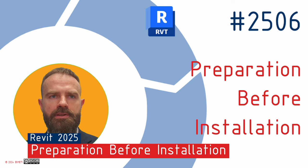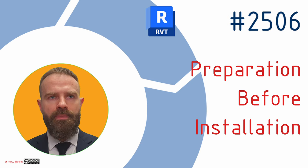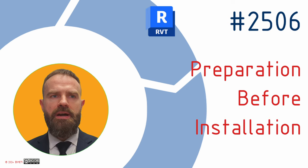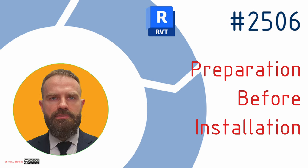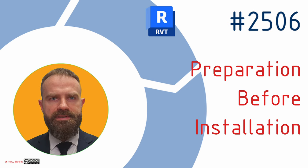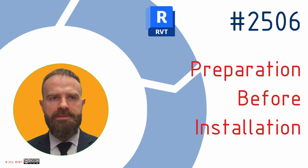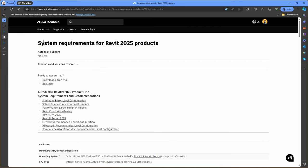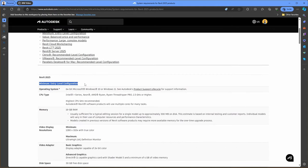Preparation before installation. Before jumping into the actual installation of Revit 2025, it's crucial to make sure your system is ready to handle the software. First, you will need to check the system requirements for Revit 2025. Autodesk regularly updates these requirements to ensure optimal performance and compatibility. You can find this information by typing 'Revit 2025 system requirements' into your preferred search engine and opening the official Autodesk link.